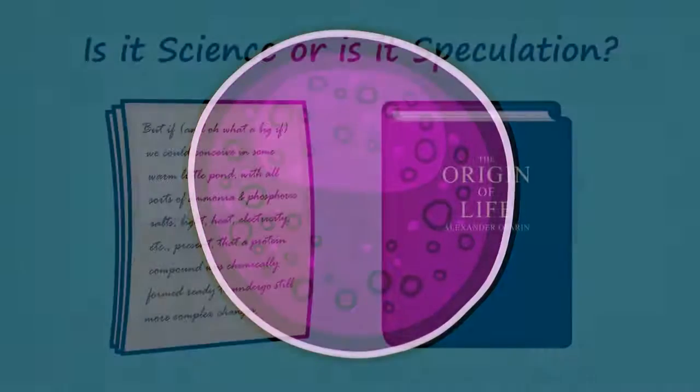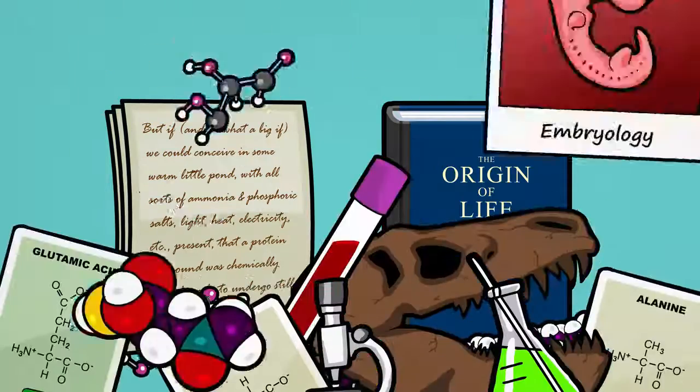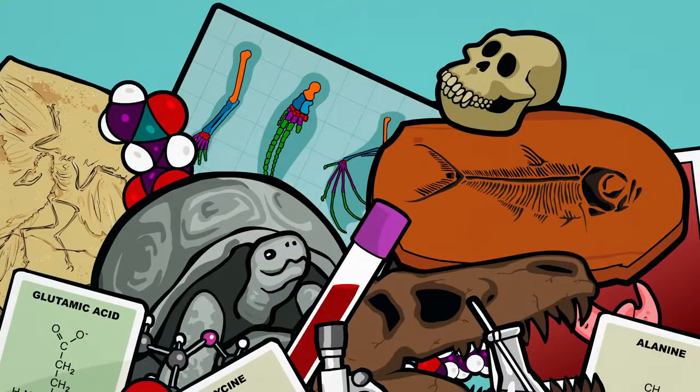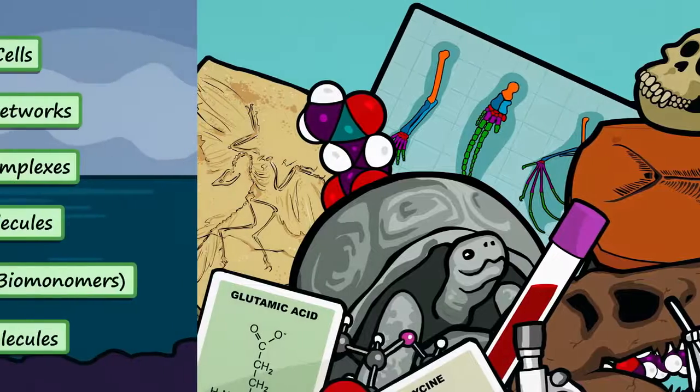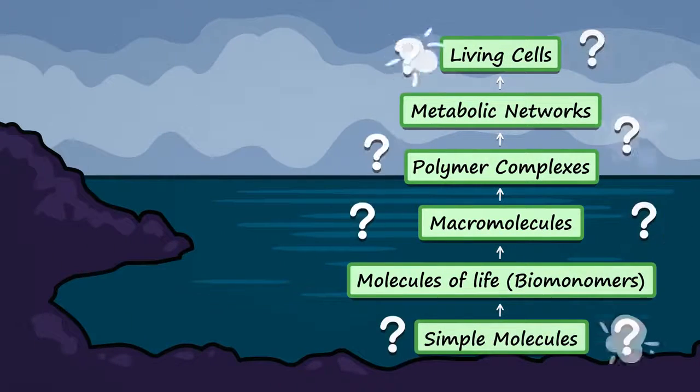At the time, Darwin's warm little pond and Oparin's primordial soup were really just speculation. They were founded on a good understanding of chemistry and biology, but they could not be considered legitimate scientific hypotheses because no one had found a way to test or observe them.